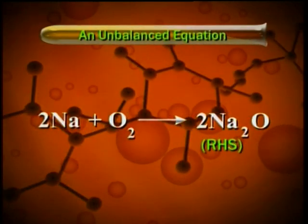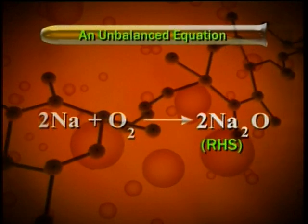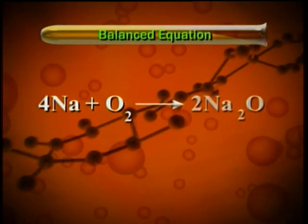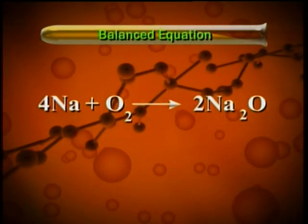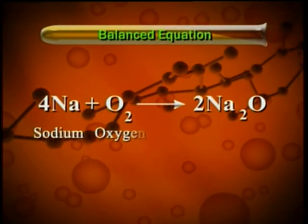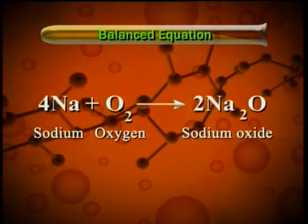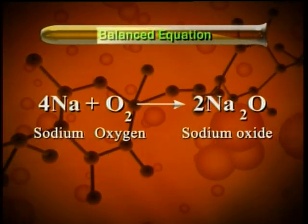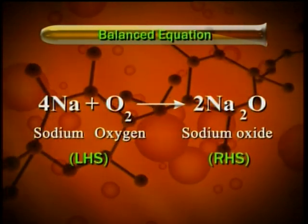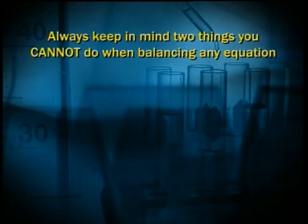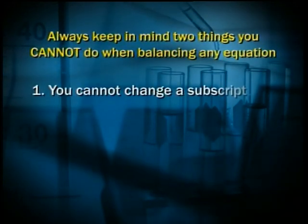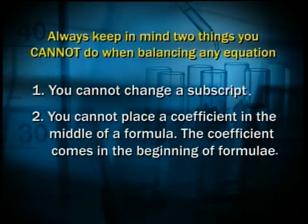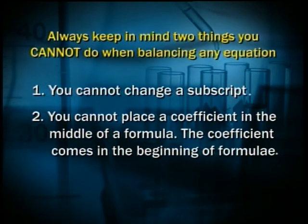The equation now looks like: 4Na + O₂ = 2Na₂O (sodium plus oxygen equals sodium oxide). This is a balanced equation because there is an equal number of atoms of each element on both sides. Always keep in mind two things you cannot do when balancing an equation: one, you cannot change a subscript; two, you cannot place a coefficient in the middle of a formula — the coefficient comes at the beginning of formulae.